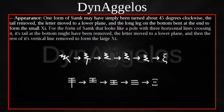For the form of samkh that looks like a pole with three horizontal lines crossing it, its tail at the bottom might have been removed, the letter moved to a lower plane, and then the rest of its vertical line removed, to form the large XI.